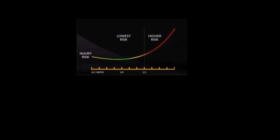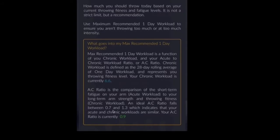This is something that we track within Driveline Pulse, which has been helpful when discussing the approaches that players take to their throwing plans. Here's Player A — 0.7 and then 1.3 — and this player falls nicely between that AC ratio. Here is their chronic workload over time, over a 28-day span.